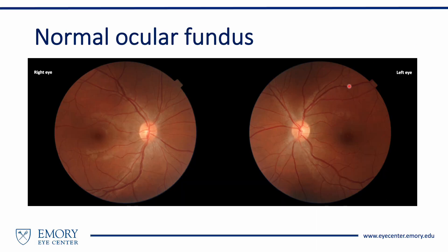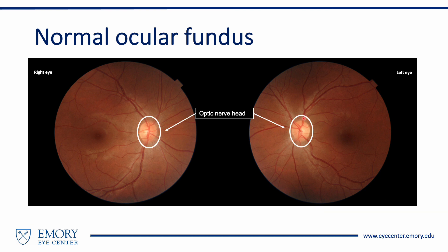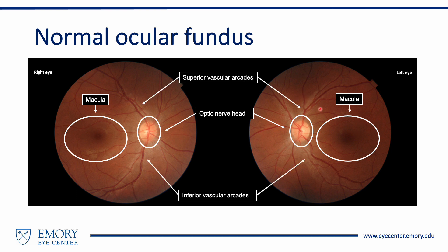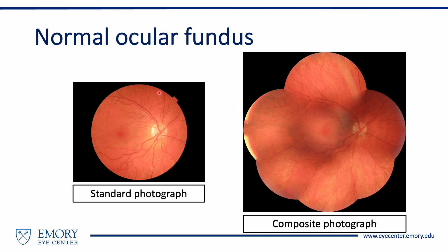Ocular fundus refers to the interior surface of the eye. Most fundus cameras have a 45-degree view and capture photographs of the posterior pole, which should include the optic nerve head, the macula, and the vascular arcades where most acute pathology is seen. The retinal periphery is typically not included in the standard 45-degree view. If retinal peripheral pathology is suspected, a composite view should be obtained.